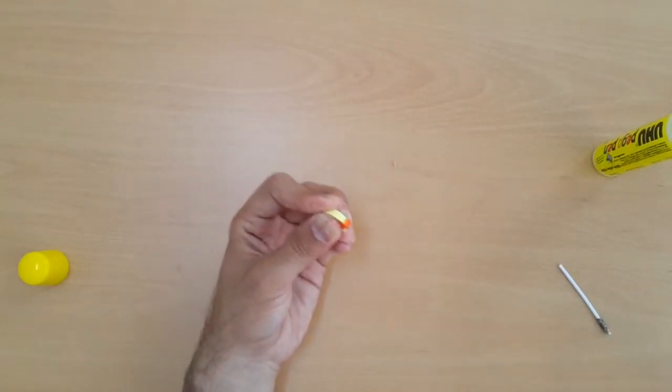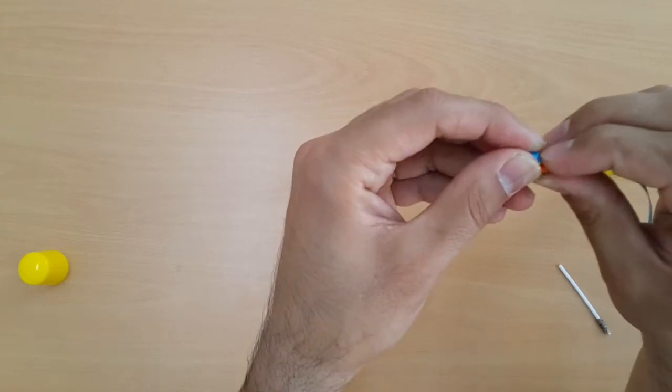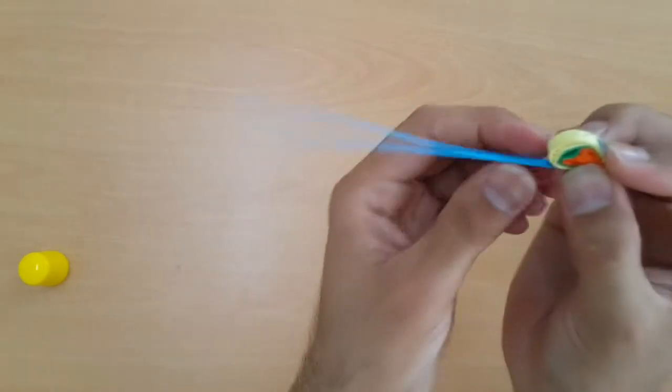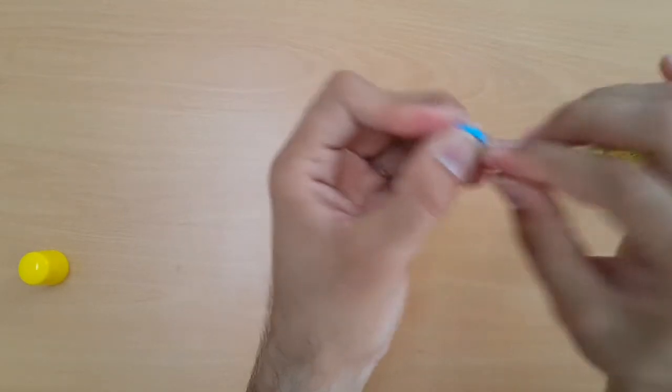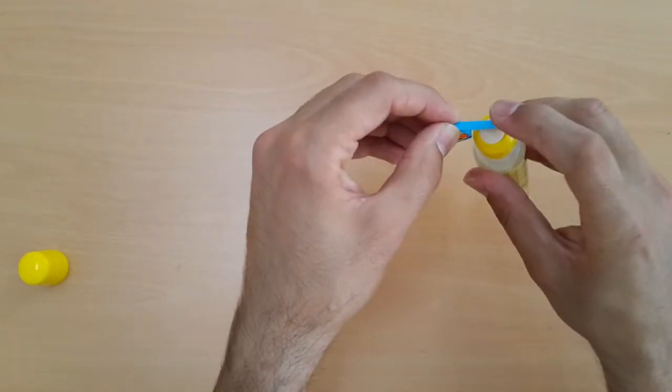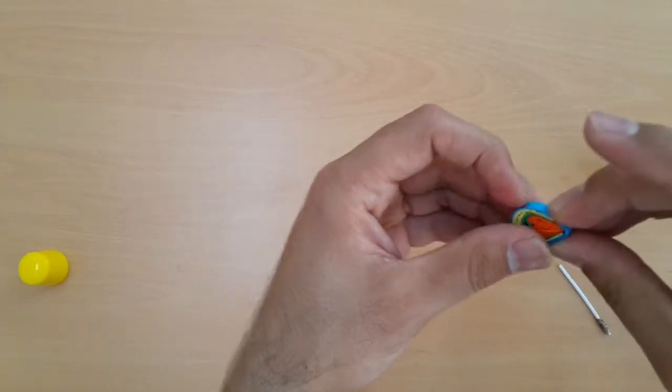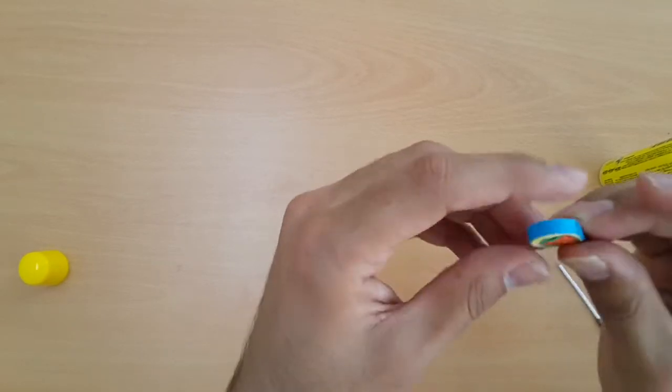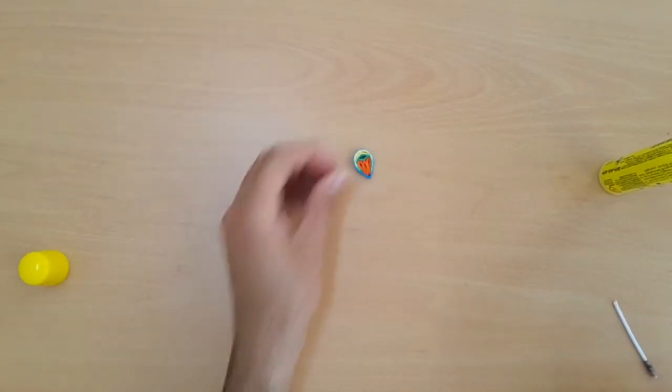Now we will put some glue on the edge of yellow and make it a nice pattern with some different colors. Now we have almost done it.